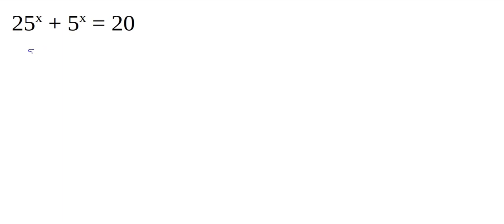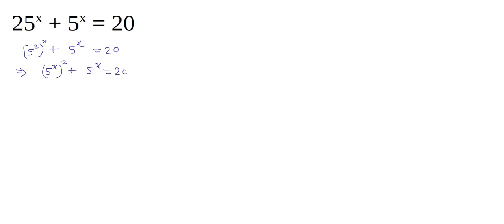25 can be written as 5 squared, and this whole thing has been raised to the power x. The next term is 5 to the power x, and this whole thing is equal to 20. Now, using the rule of exponents, these exponents can be exchanged, and this can also be written as (5 to the power x) whole squared plus 5 to the power x is equal to 20.